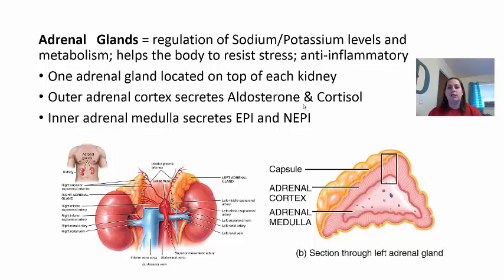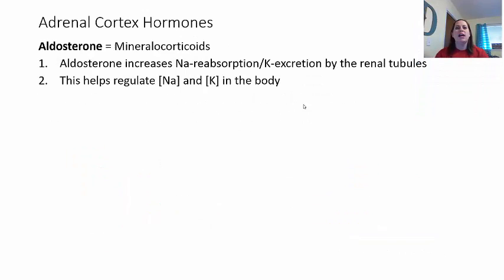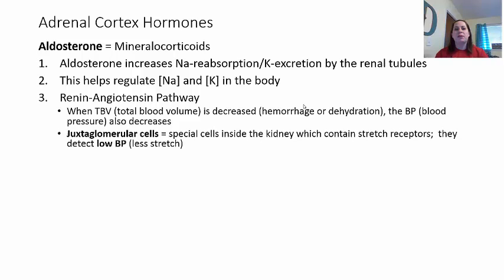Aldosterone, also known as a mineralocorticoid, increases sodium reabsorption in the kidneys while causing potassium excretion — regulating sodium and potassium levels in the body. It uses the renin-angiotensin pathway. This occurs when total blood volume (TBV) gets too low — due to bleeding or dehydration — which decreases blood pressure. This is detected by juxtaglomerular cells inside the kidneys, which contain stretch receptors. Low blood pressure means less stretch, triggering their signal.